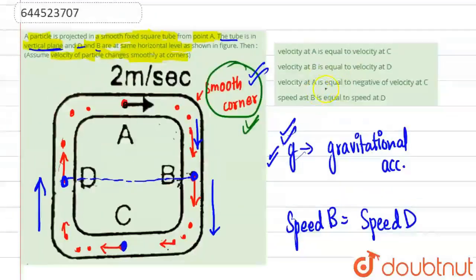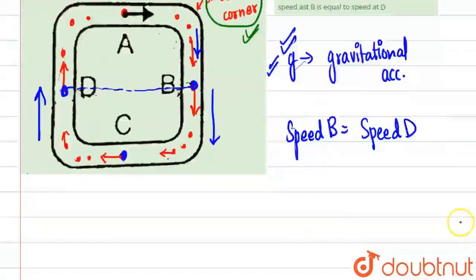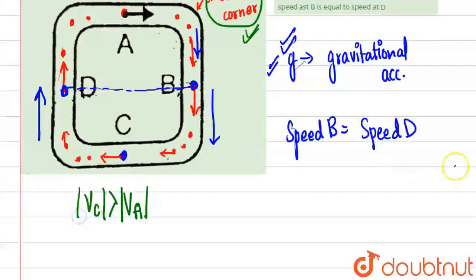At C, if you see, due to G, this is not possible that the velocity at A equals negative velocity of C. Why? Because velocity of C becomes greater than velocity of A. Only magnitude, if we see, then this is the case.